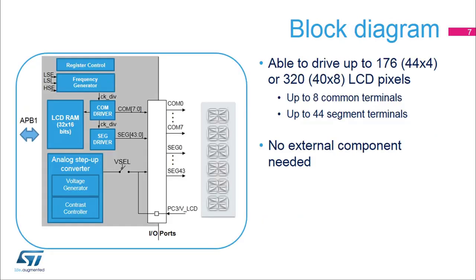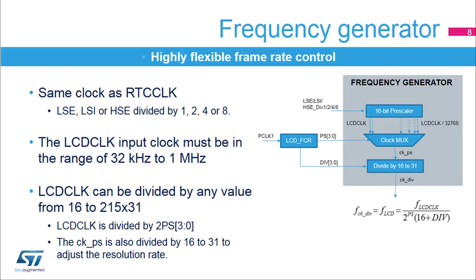Here is the block diagram of the LCD controller, which also shows the interface with the LCD display. This controller is able to drive 176 (44x4) or 320 (40x8) LCD pixels. It is made up of the frequency generator used to deliver the correct clock frequency to drive the LCD display, the COM and SEG drivers, the LCD RAM which contains pixel information, active and inactive, and the analog step-up converter used to adjust the contrast. No external components are required to make the controller work except an external capacitor connected to VLCD when the step-up converter is used, VSEL closed.